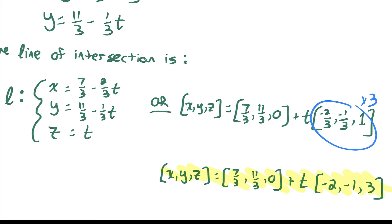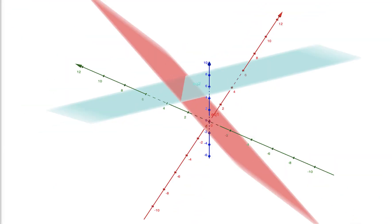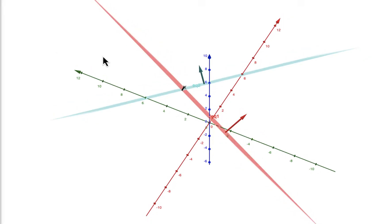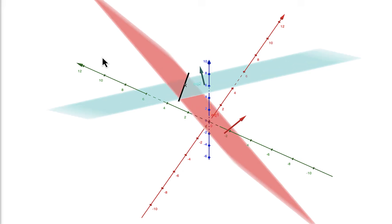Let me show you what this looks like in Desmos. Here are the two planes. Notice their normal vectors are clearly not parallel to each other, which is what told us the planes were not parallel, which is what told us they intersect in this black line.